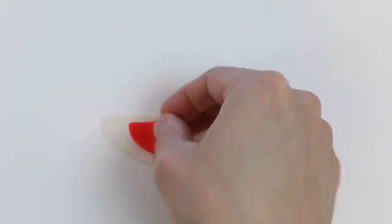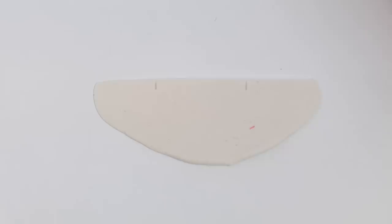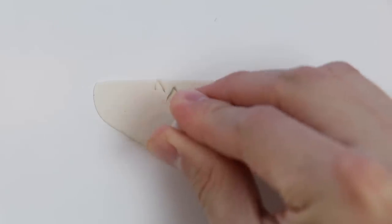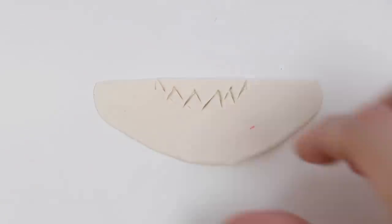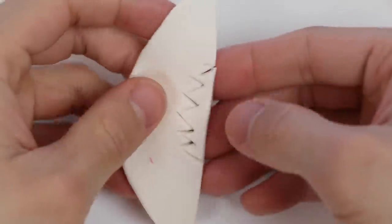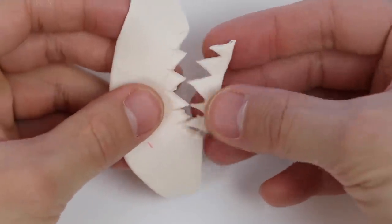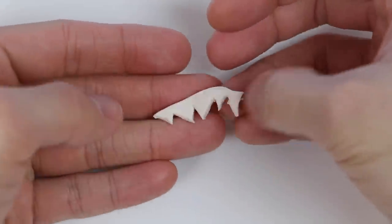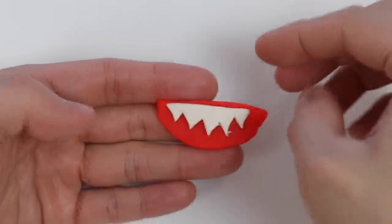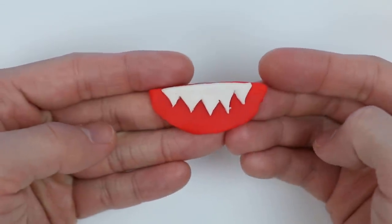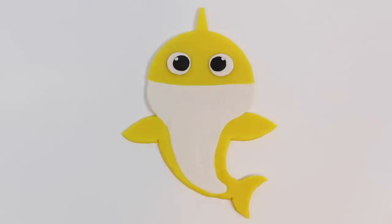There we go. Now let's make the cute baby fangs. Oh, they look sharp. Let's attach the teeth to the mouth. Excellent. Let's go back to the baby shark. Here you go.